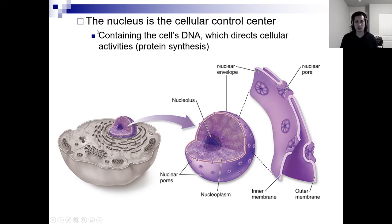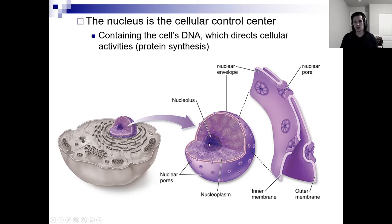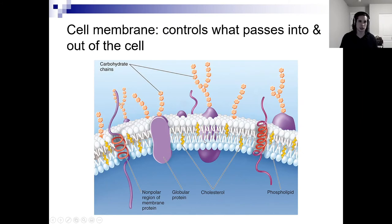The nucleus is the control center — it contains the cell's DNA, which directs cellular activities and protein synthesis. Within your nucleus you have something called a nucleolus, and your nucleolus is where you have a lot of rRNA. We'll talk about rRNA much later.